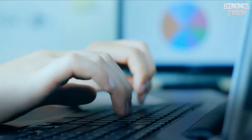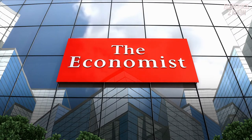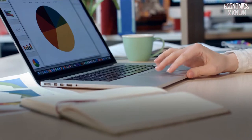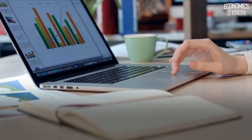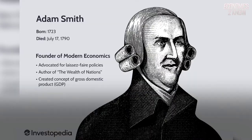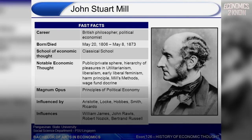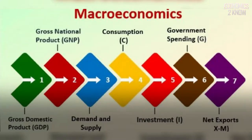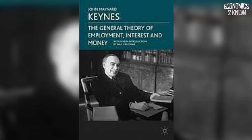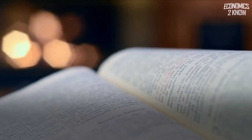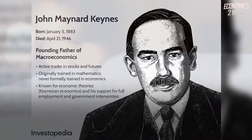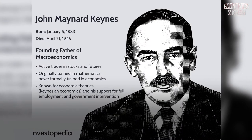While the word macroeconomics is relatively new — around 1940 — many of the key concepts have been studied for much longer. Unemployment, prices, growth, and trade have all been concerns of economists since the discipline's inception. Early work by Adam Smith and John Stuart Mill explicitly addressed themes now recognized as macroeconomics. Macroeconomics as we know it now began with John Maynard Keynes's 1936 publication of The General Theory of Employment, Interest and Money.